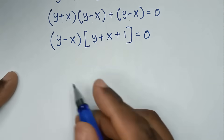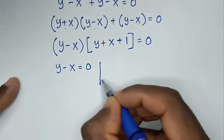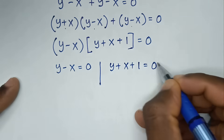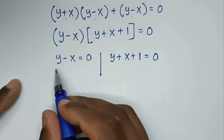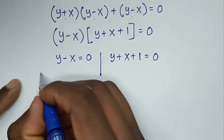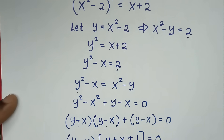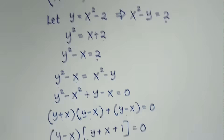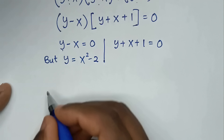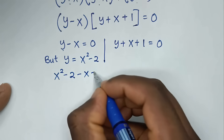Now from here, y minus x is common, so we take y minus x out of bracket: this divided by y minus x is y plus x, then this divided by y minus x is 1, so plus 1 bracket, is equal to 0. We have two solutions: y minus x equals 0, and y plus x plus 1 equals 0. Now into the first solution, y minus x, and we recall y equals x² - 2, so it will be x² - 2 minus x equals 0.